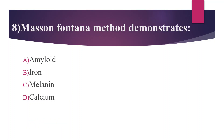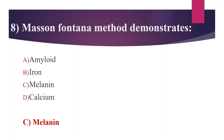Eighth question: Masson-Fontana method demonstrates — Option A: Amyloid, Option B: Iron, Option C: Melanin, Option D: Calcium. Answer is Option C, Melanin. Masson-Fontana method demonstrates melanin. For other options: amyloid can be detected by Congo red method; iron can be detected by Perl's Prussian blue method; calcium can be detected by von Kossa method.